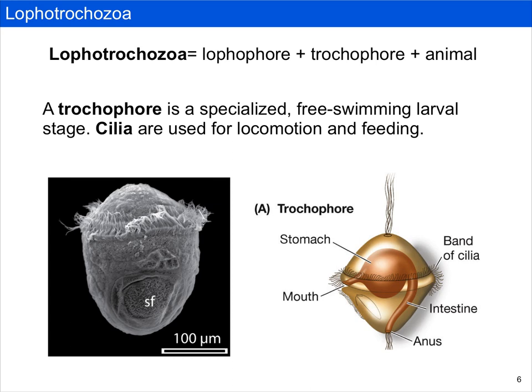The second part of the name refers to the trochophore. The trochophore is a specialized free-swimming larval stage that's common to any aquatic Lofotrochozoan. Cilia are used for locomotion and feeding, and it looks like a little spaceship that swims around in the ocean. Keep in mind there are many examples of terrestrial Lofotrochozoans, and in those cases the trochophore larva has been lost. So the trochophore larva is also a synapomorphy of Lofotrochozoa, but it's been lost in all terrestrial groups.